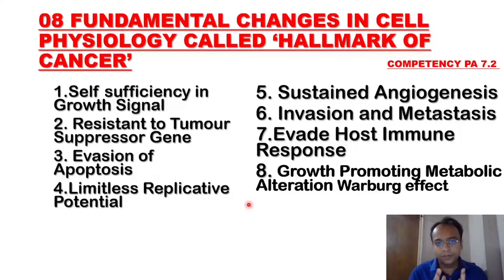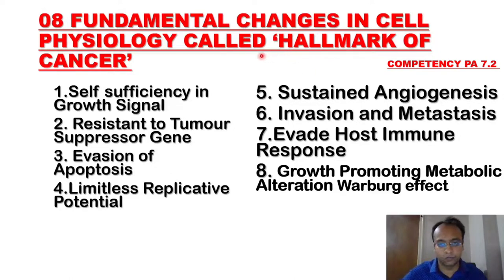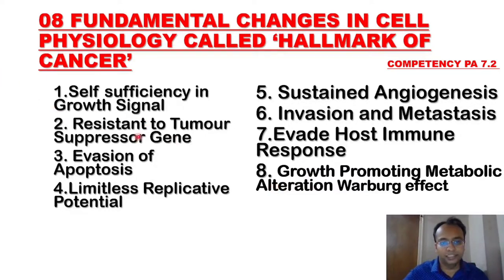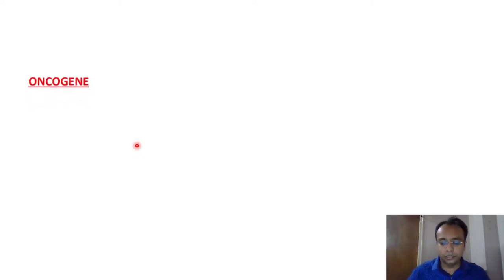In our previous lecture on neoplasia, we saw there are basically eight fundamental changes that occur in cell physiology in cancer, known as the hallmarks of cancer or the molecular basis of cancer formation — competency number PS7.2. Today we'll discuss resistance to tumor suppressor genes, which is one of those molecular bases of cancer.